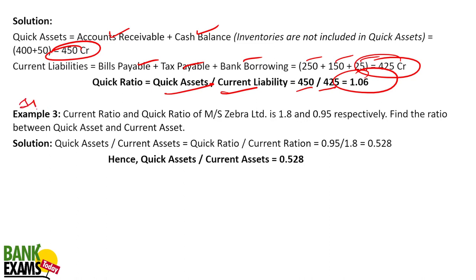Here is a very important exam question: The current ratio and quick ratio of Zebra Limited are 1.8 and 0.95 respectively. Find the ratio between quick assets and current assets. Quick Asset ÷ Current Asset = Quick Ratio ÷ Current Ratio = 0.95 ÷ 1.8 = 0.528.